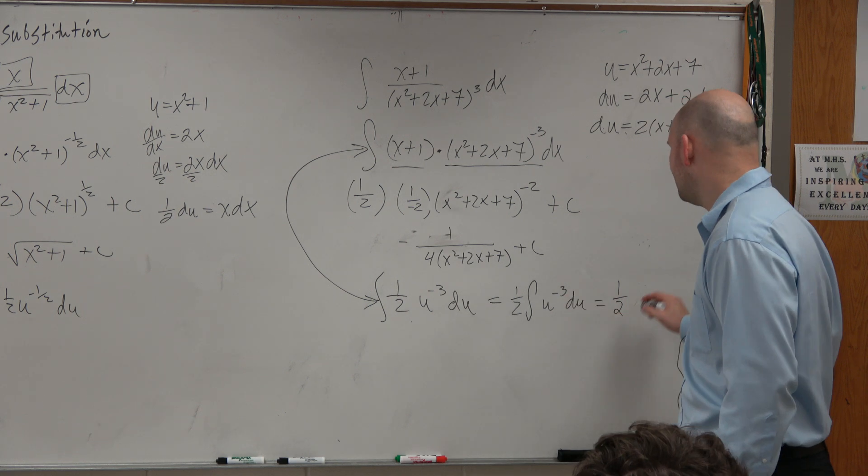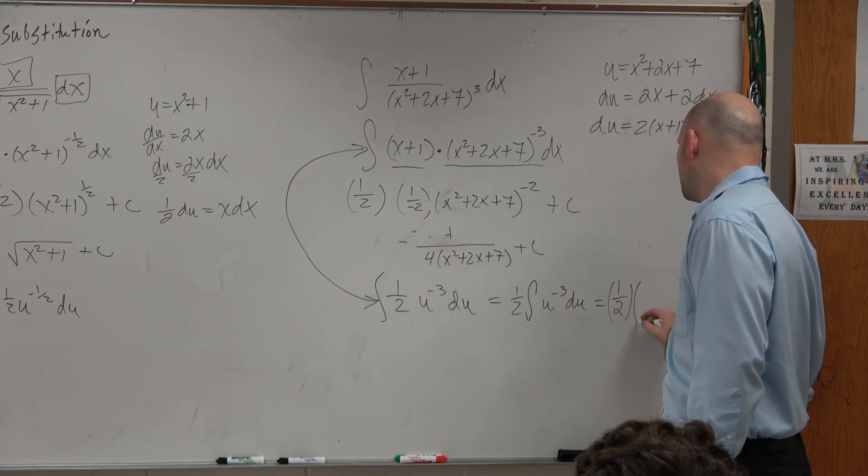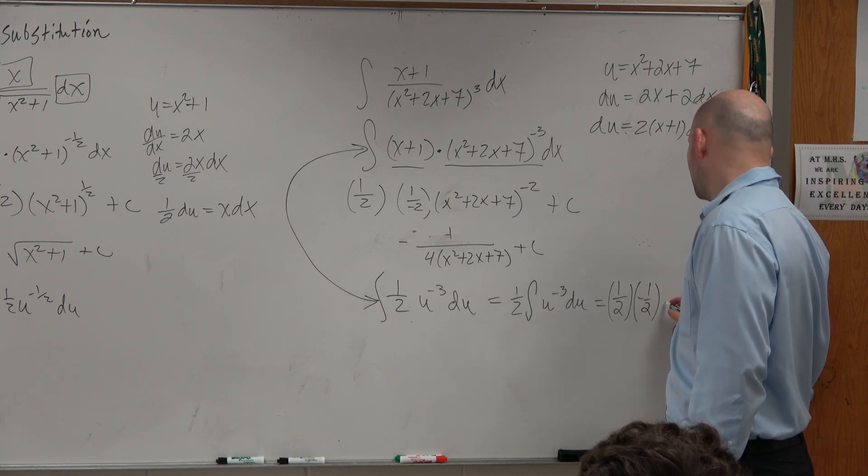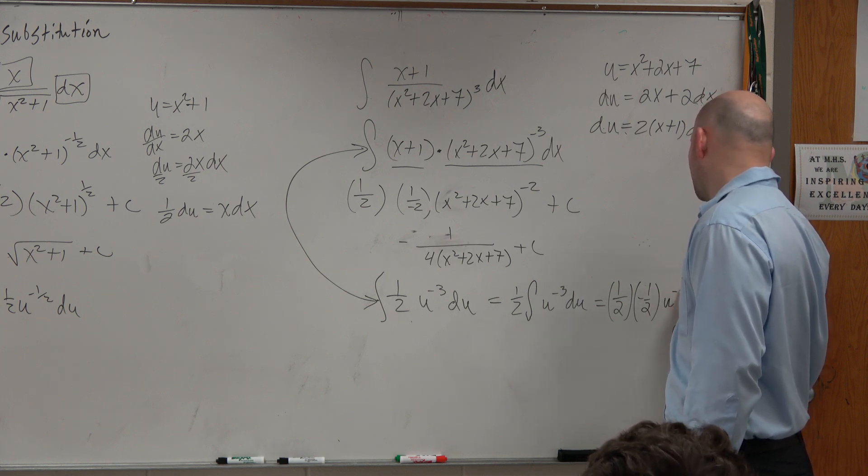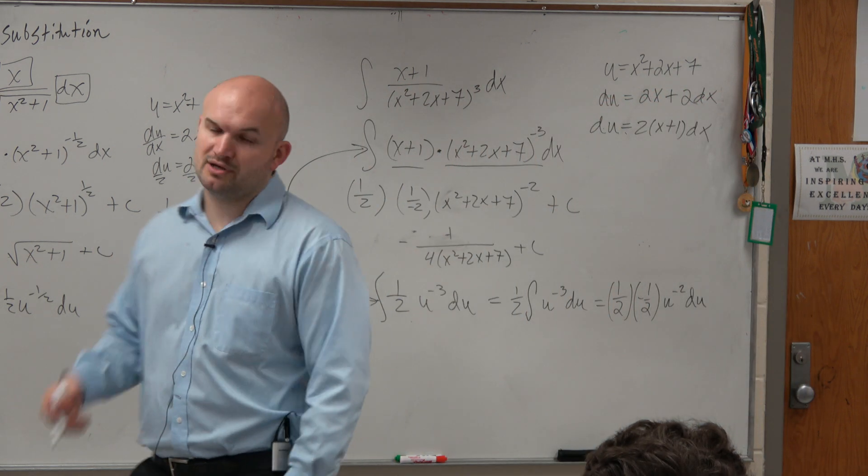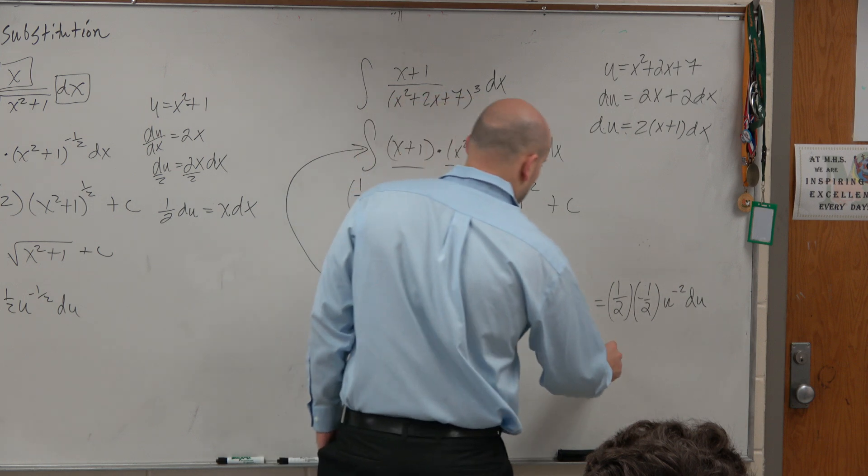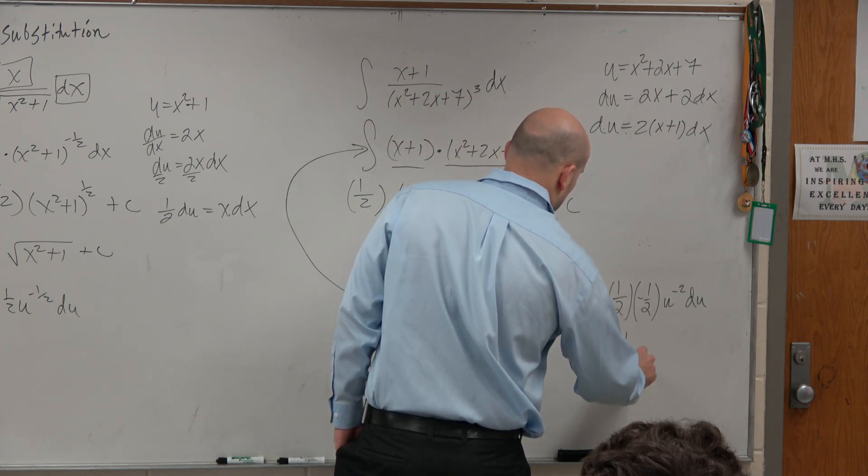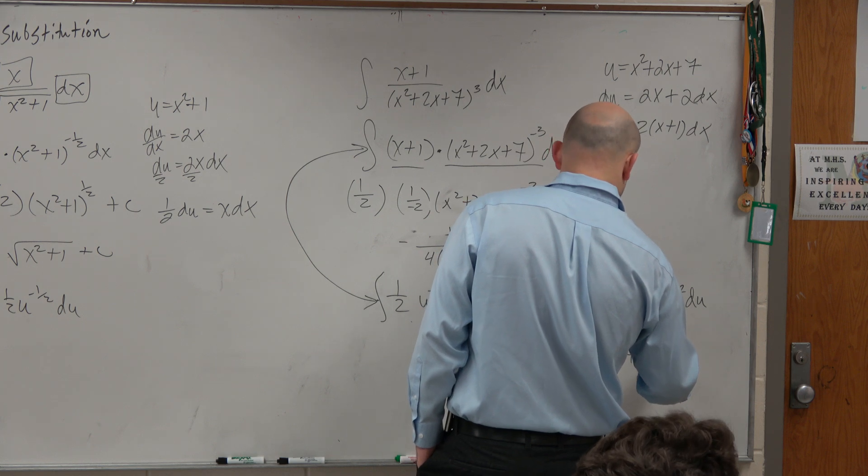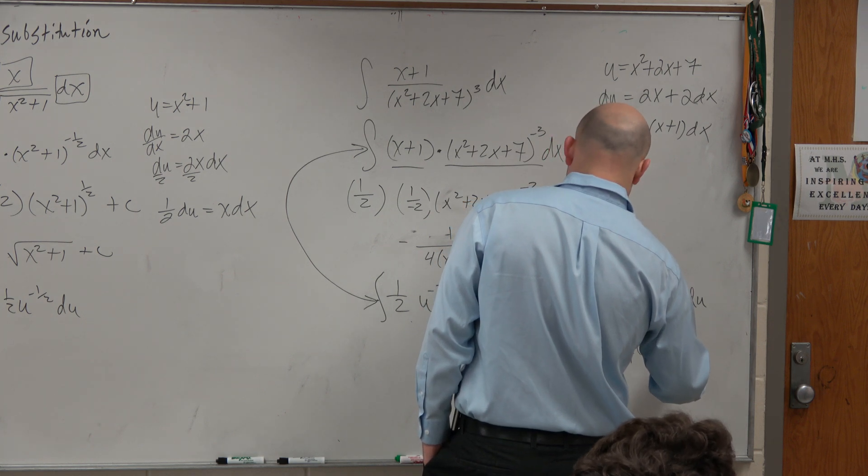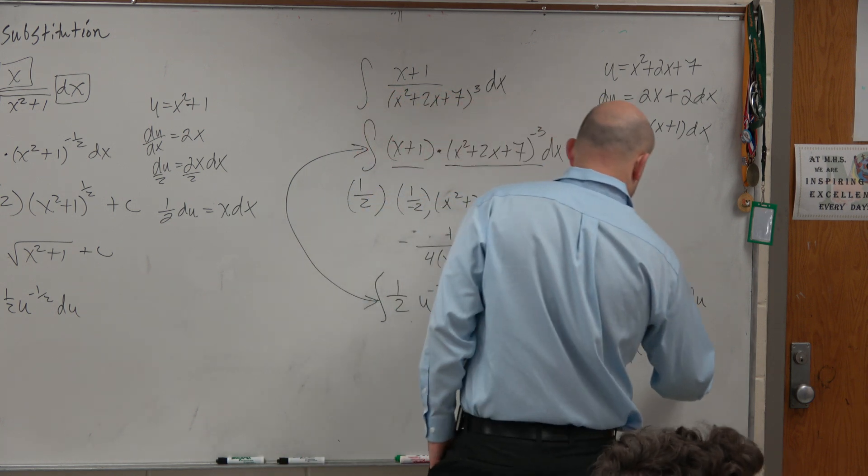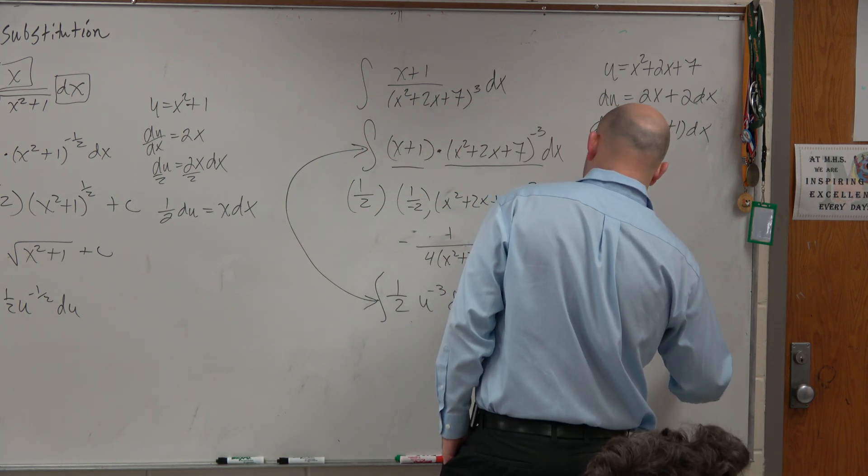I get 1 half, that's going to be times negative 1 half, times or integrate integral of u to the negative second du. And then I just plug everything back in. And I'm not going to write it like that. I'll just write it as. Oh, did I not integrate? Yeah, I did. OK. 2x plus 7. 2x plus c.